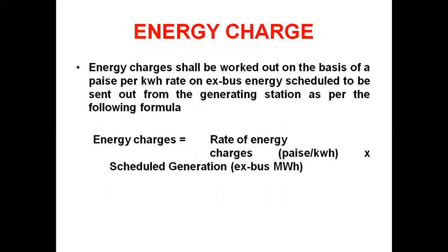The energy charge is worked out on the basis of a price per kilowatt-hour on the ex-bus energy scheduled to be sent out from the generating station, as per the following formula: Energy Charge = Rate of energy charges (price per kWh) × Scheduled generation (ex-bus MWh).